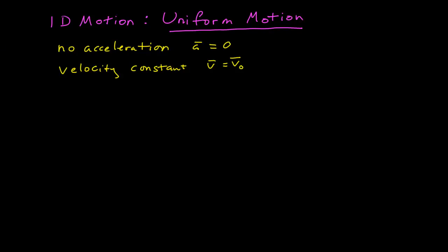So if I want to describe this motion in one dimension, I need a coordinate system, but I only need a coordinate system with one axis, which I'll call here the x-axis. That is the positive direction, this is the negative direction. I have an origin of my coordinate system, and so in one dimension, any location on the axis can be represented by a single number.